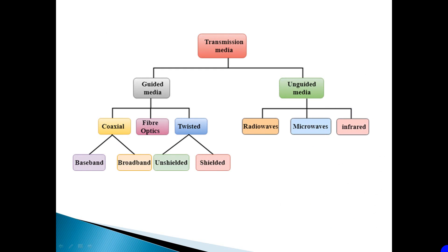Coaxial is divided into two types: baseband and broadband. Twisted pair is also divided into two types, i.e. unshielded and shielded.